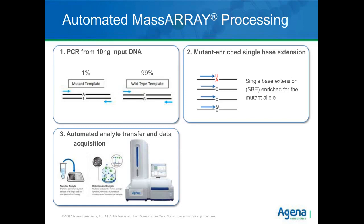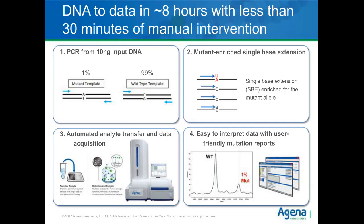Following the single base extension, with our newest instrument — the chip prep module — it's completely automated sample conditioning, transferring onto the SpectraChip, and mass spectrometry analysis. The Agena Bioscience system uses mass spectrometry as an analyzer: very quick and highly accurate because we're measuring the unlabeled nucleic acid itself down to its molecular mass. Mass spectrometry delivers a very flat baseline and highly specific sharp peaks, allowing us to generate very simple, user-friendly mutation reports. On screen, I have an example of a 1% mutation shown in red — a very clear peak from the baseline — versus the wild-type peak in black at 99% frequency.